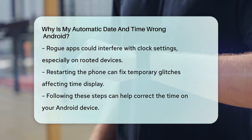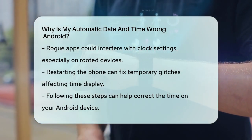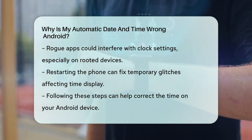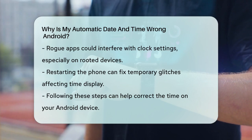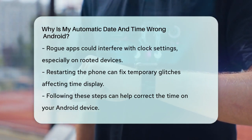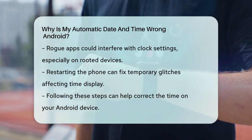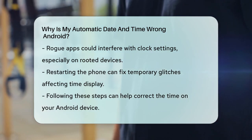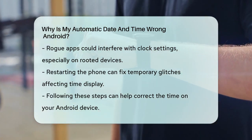Restarting your phone can also sometimes resolve the issue, as it can reset any temporary glitches that might be causing the problem. By following these steps, you should be able to get your Android phone's clock showing the correct time again.